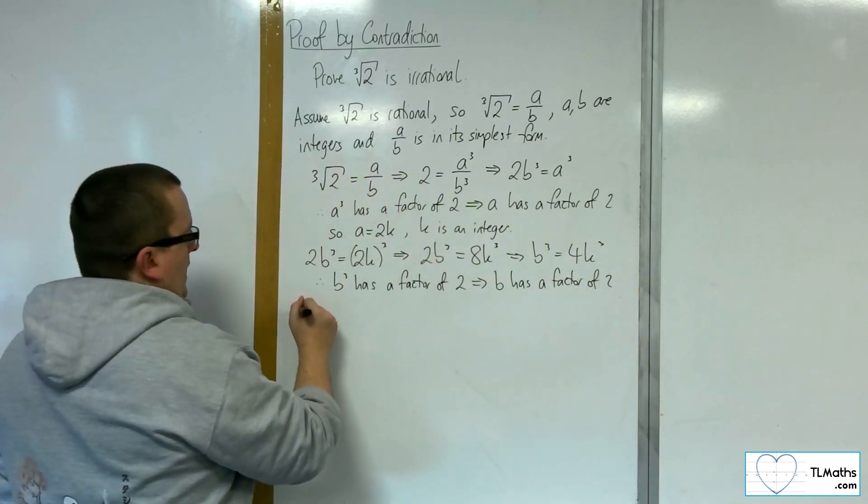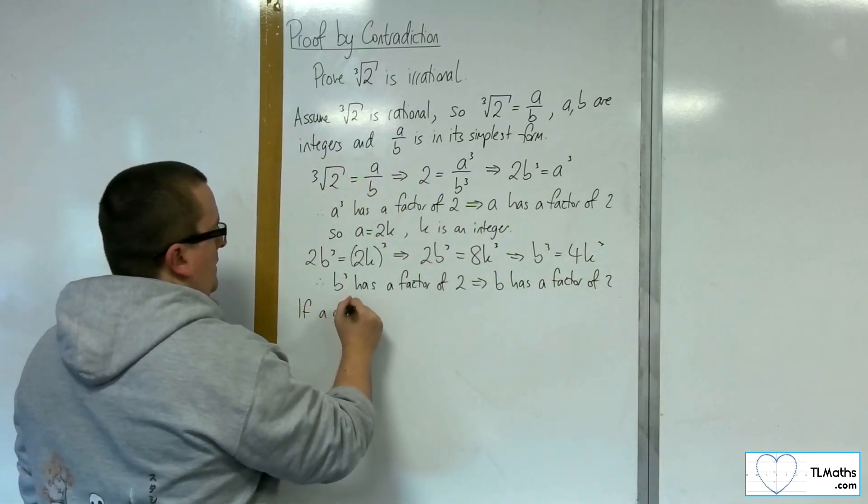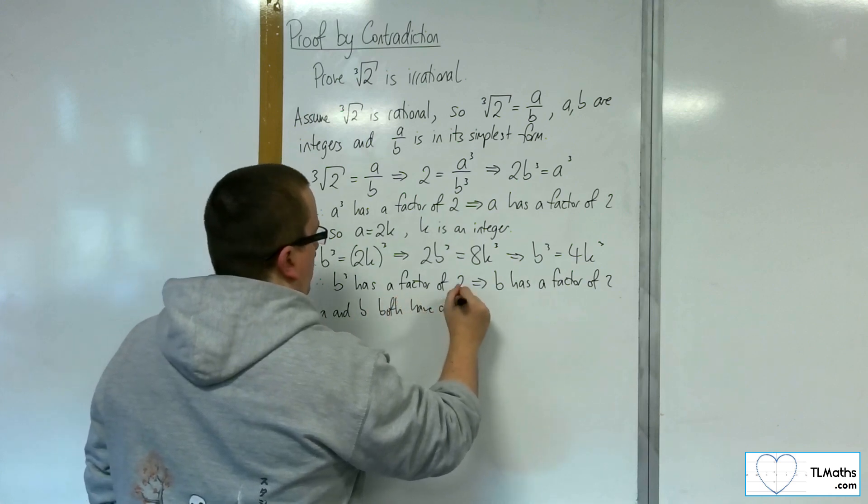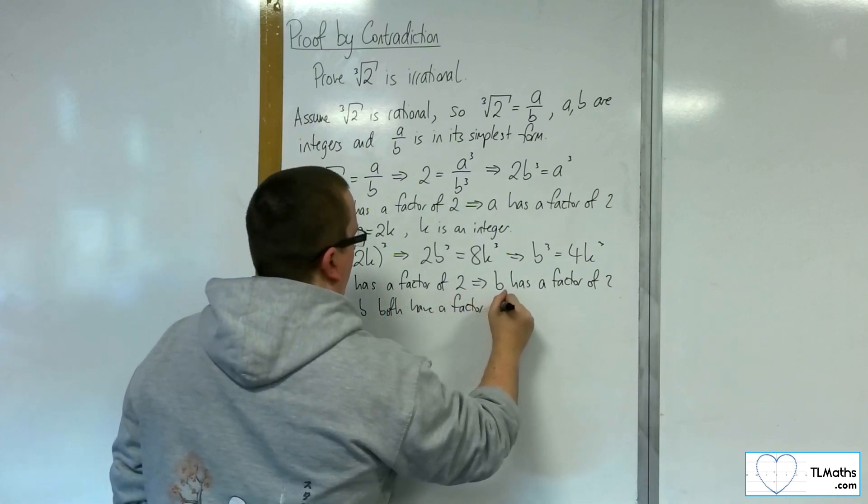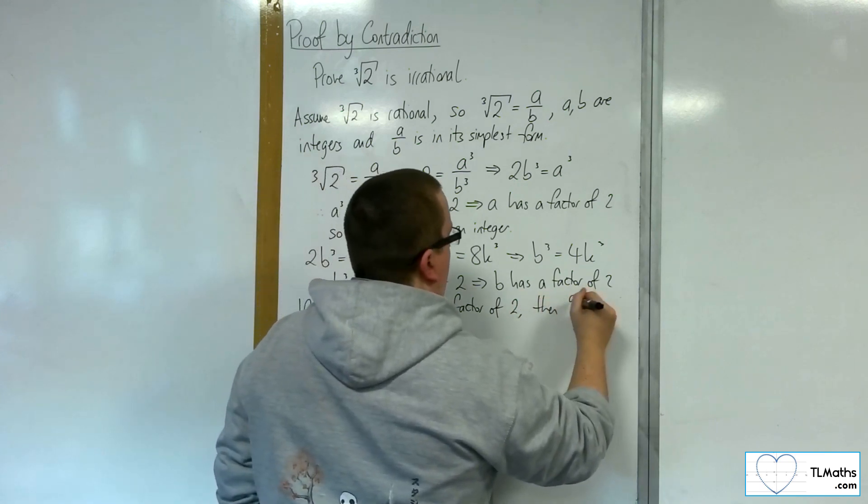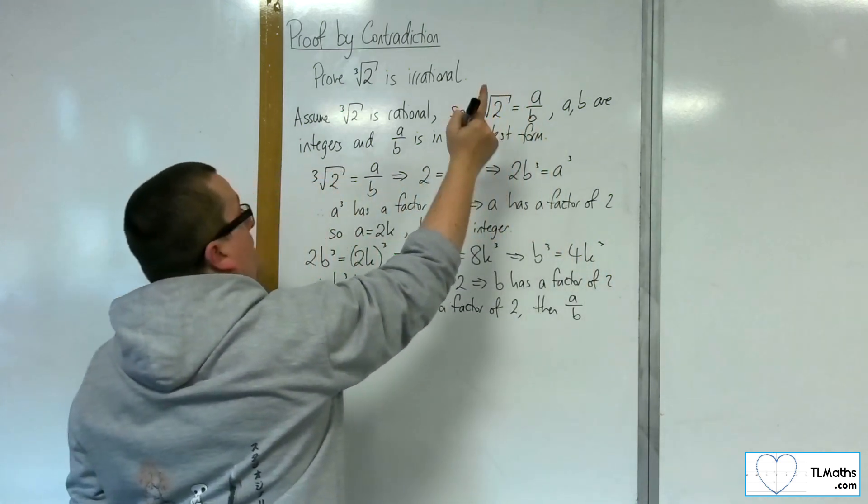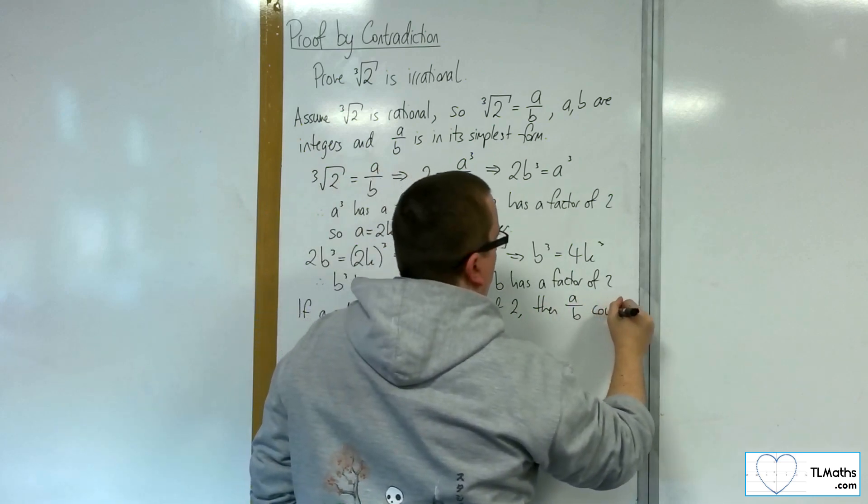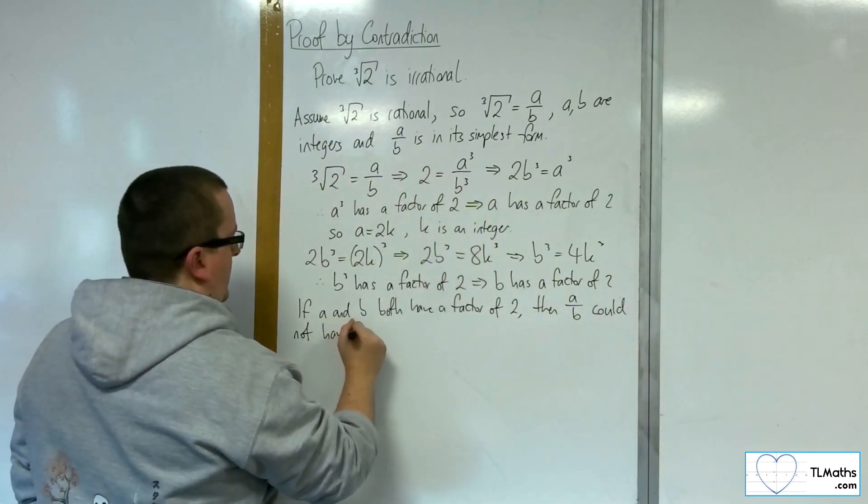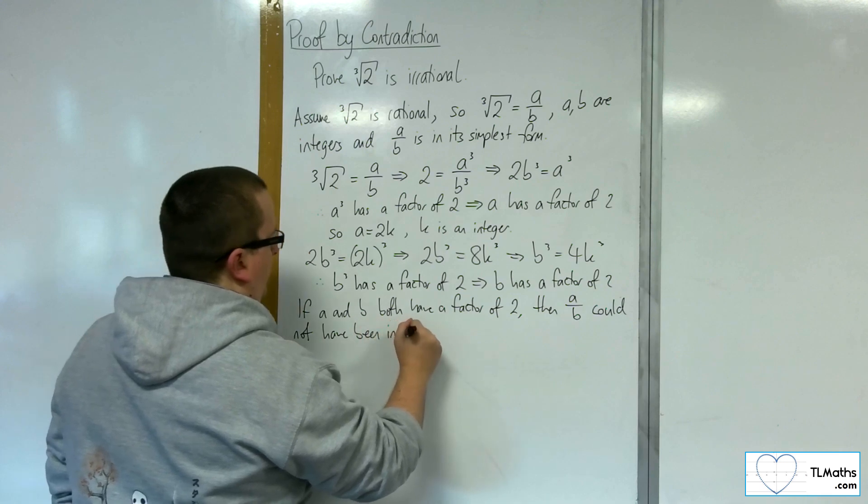OK, so if a and b both have a factor of 2, then a over b, that fraction that we had up here, could not have been in its simplest form.